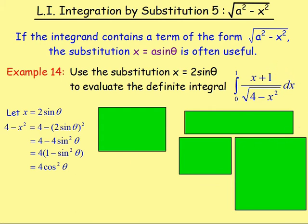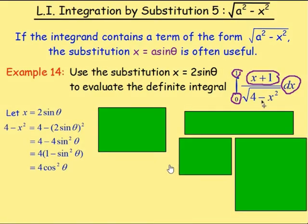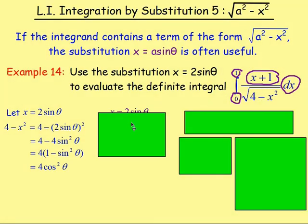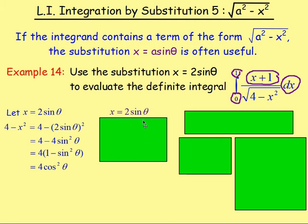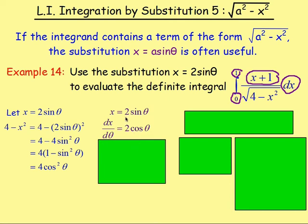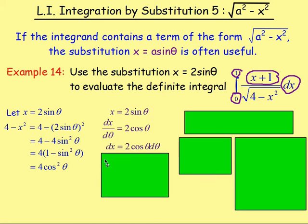We still have x plus 1 and dx in terms of x, and limits in terms of x. We need to write everything in terms of theta. If x equals 2 sine theta, then differentiating: dx/dθ equals 2 cos theta. Multiplying both sides by dθ gives dx equals 2 cos theta dθ.